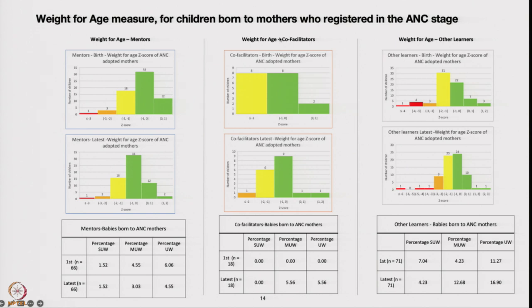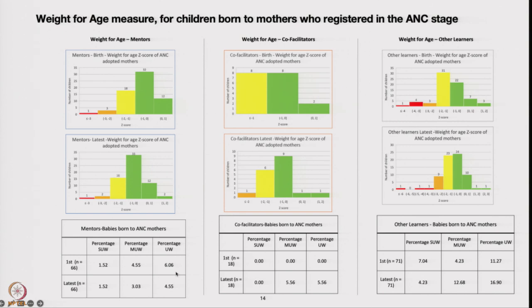Here is weight-for-age data for children born to mothers registered at ANC stage. Two mothers were supposed to be adopted at seven months of pregnancy, and for almost two months, mentors taught those mothers about protein-rich food every two weeks. Mothers adopted by super mentors showed that the percentage of SUW, MUW, and underweight at birth — meaning low birth weight babies — was much lower. Only 6% of children were born low birth weight, and that underweight further reduced from 6% to 4.5%.